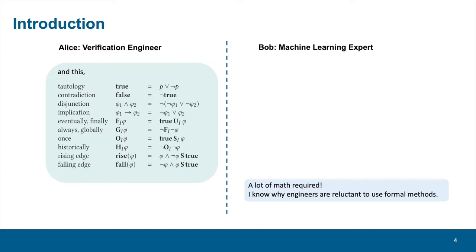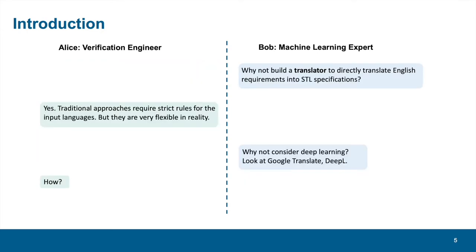Bob is baffled by the complex symbols. It seems to require a lot of math. I know why engineers are reluctant to use formal methods, he says. Then, Bob suggests to Alice, maybe it is a good idea to build a translator to directly translate English into formal specifications.